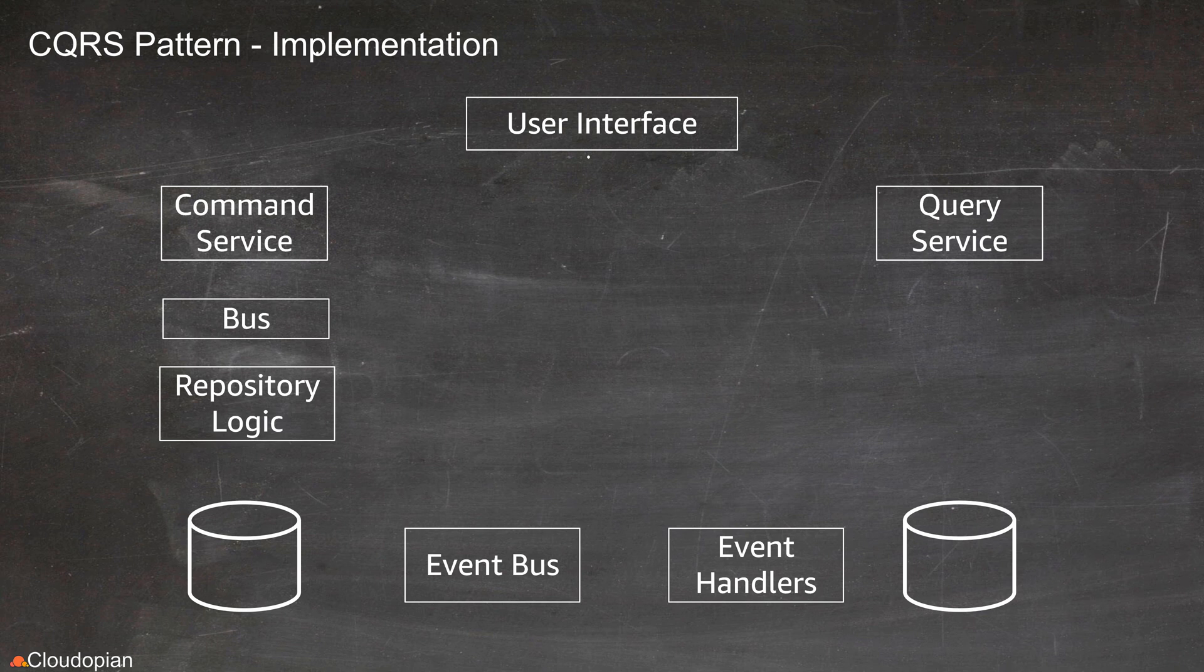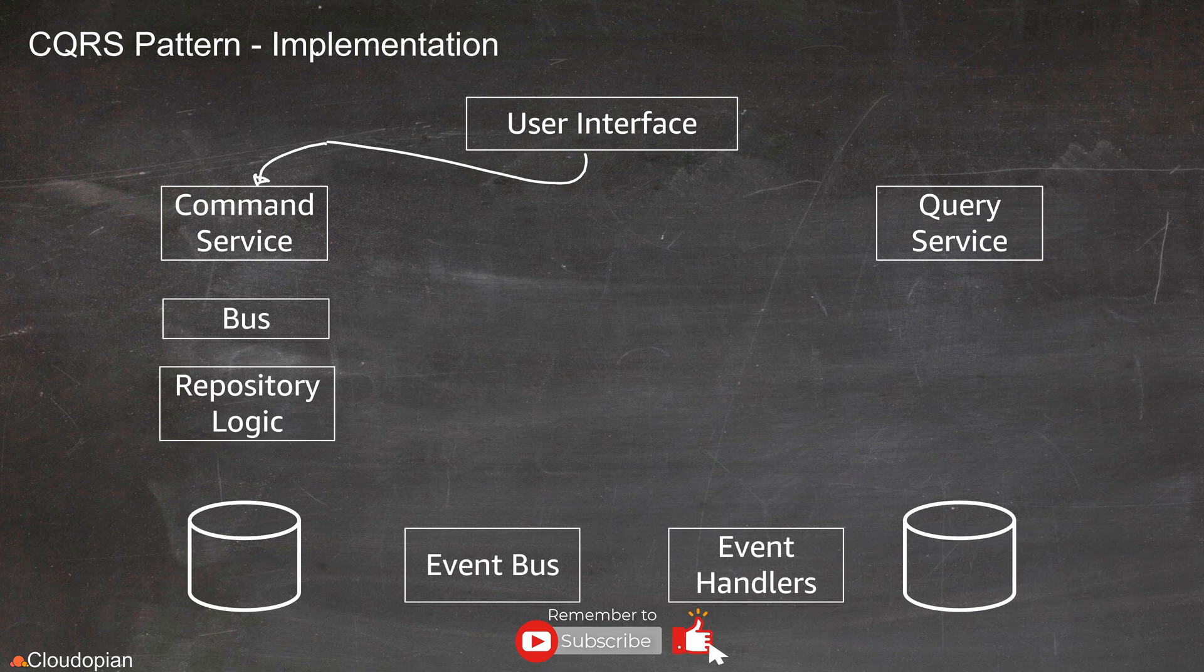Normally, in a real world implementation of CQRS pattern, you may have more components than what I discussed before. Your user interface will communicate with the command service. This could be a very simple web service, maybe running on containers, to give you a quick response for the users. Once they make some modification, the service will directly return to the users after saving that information into some sort of a bus.